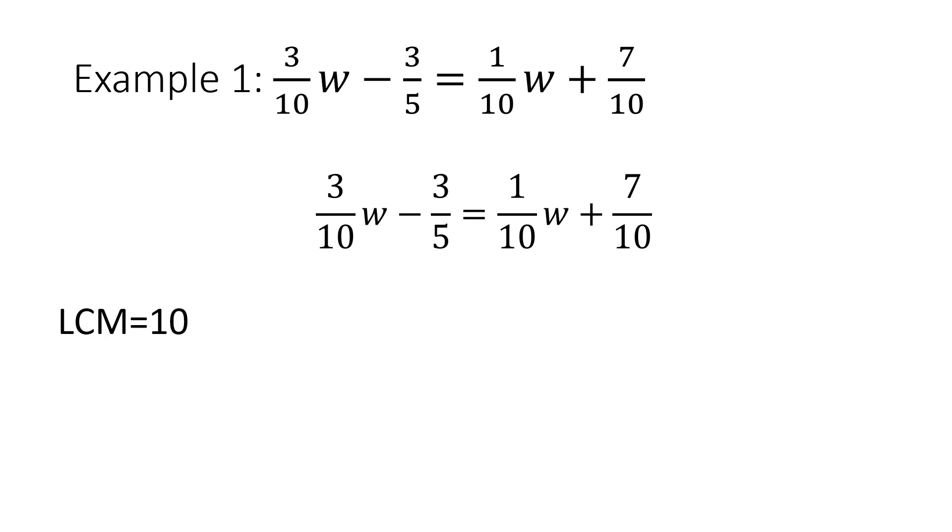What I'm going to do is multiply every single number in my equation by 10. When I do that, it simplifies to 3W - 6 = 1W + 7.